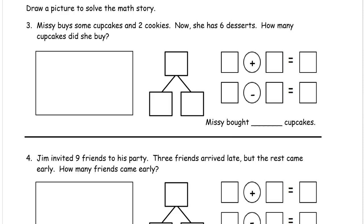Now we're going to draw our own picture to solve a math story. Missy buys some cupcakes and two cookies. Now she has six desserts. How many cupcakes did she buy? It says 'some cupcakes,' so we don't know how many cupcakes — 'some' is one of the words we're really looking for here. The desserts are the cupcakes and the cookies all counted together because they're both different kinds of desserts. We can draw the two cookies — those are the two cookies. So far that's two desserts.